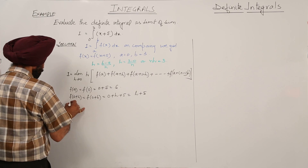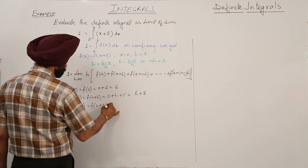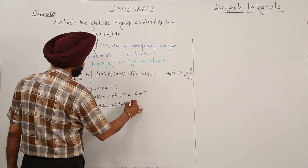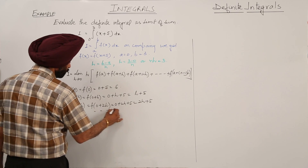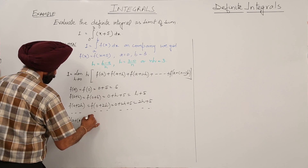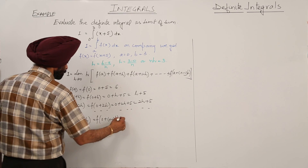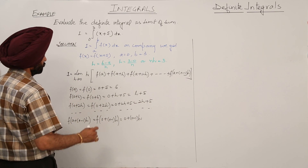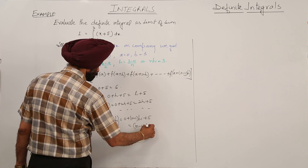Is it clear? f(a+2h): f(0+2h) is equal to 0 plus 2h plus 5, so we are having 2h plus 5. We can move like this, and then we are having f(a + (n-1)h), which is equal to f(0 + (n-1)h), and this is equal to 0 plus (n-1)h plus 5, which equals (n-1)h plus 5.